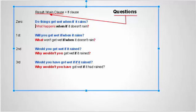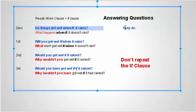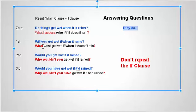The wh-questions are very simple. Just when answering the question, don't repeat the if-clause. 'Do things get wet if it rains?' — 'They do.' Don't say 'They do get wet if it rains.' So, don't repeat the if-clause when you answer the questions. 'Will you get wet if it rains?' — let's take a look at our answers.